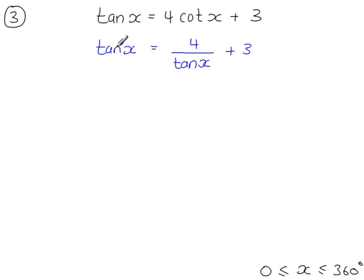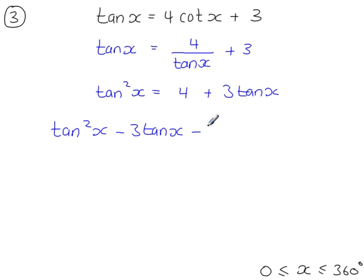So get rid of the fraction. Multiply by tan x here, here, and here. And moving all the terms to one side, because this is a disguised quadratic equation. So we've got tan squared x minus 3 tan x minus 4 is equal to 0.